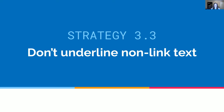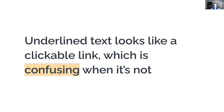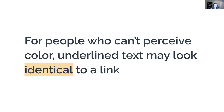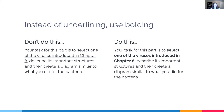A final tip related to links: do not underline non-linked text. Links are conventionally underlined, so if we underline text that's not a link, it still looks clickable — which is confusing when nothing happens when you click it. For people who can't perceive the different color of links, underlined text may literally look identical to a link. The solution is simple: instead of underlining, use bolding. Unless it's a heading — then use a real heading.